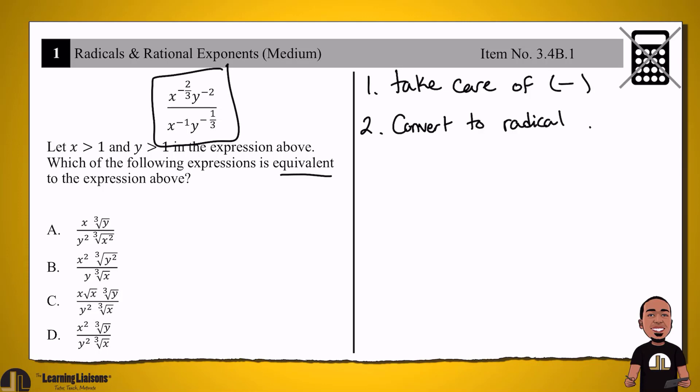Alright. So now that we have that game plan, now this is where the problem is much easier to complete. So watch this. Let's rewrite everything. We have x to the power of negative two-thirds, y to the negative two, x to the negative one, y to the negative one-third.